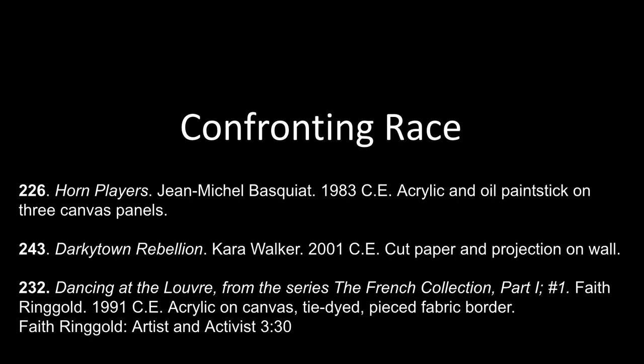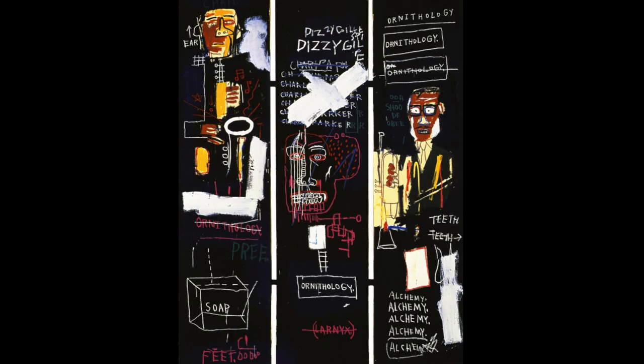First we're going to start with Horn Players by Jean-Michel Basquiat, painted in 1983, acrylic and oil paint stick on three canvas panels. Here is that work — I'll give you a couple seconds just to look at it. It's very different from some of the other works we've looked at so far, with a lot of components going on across the three different panels.